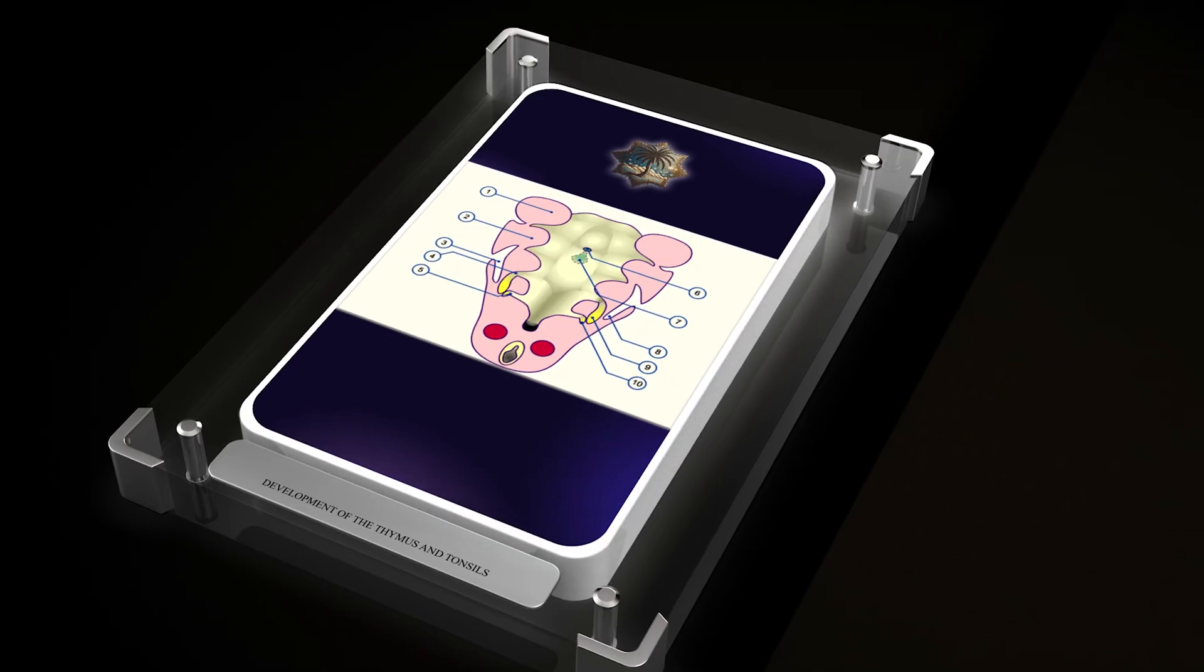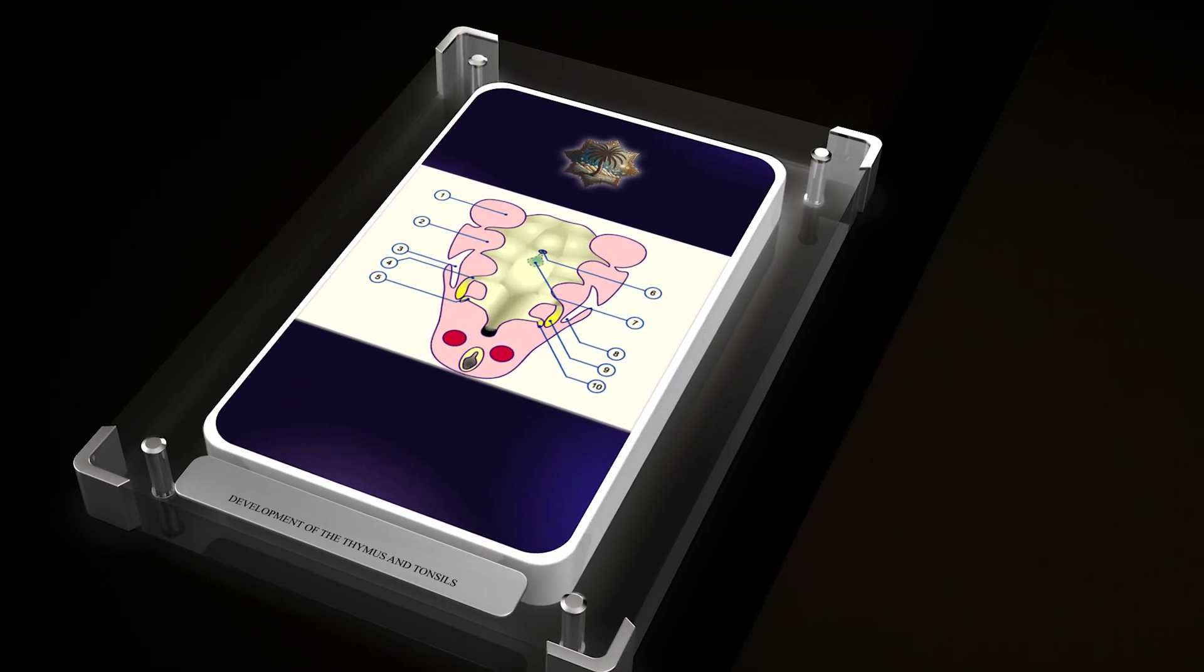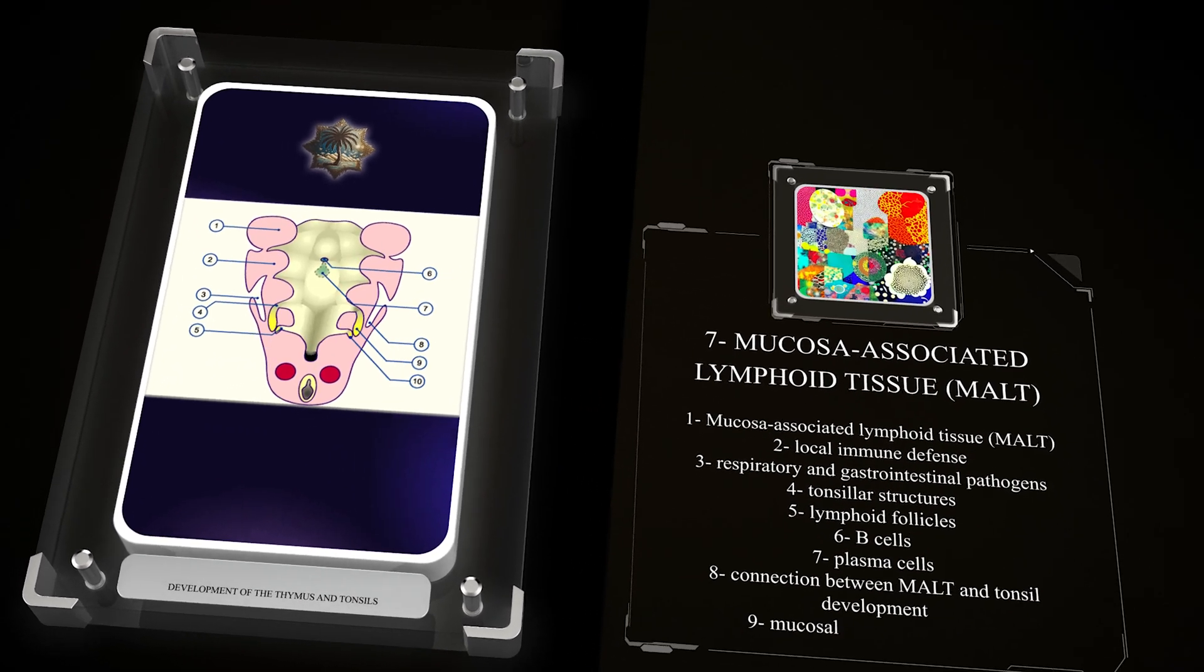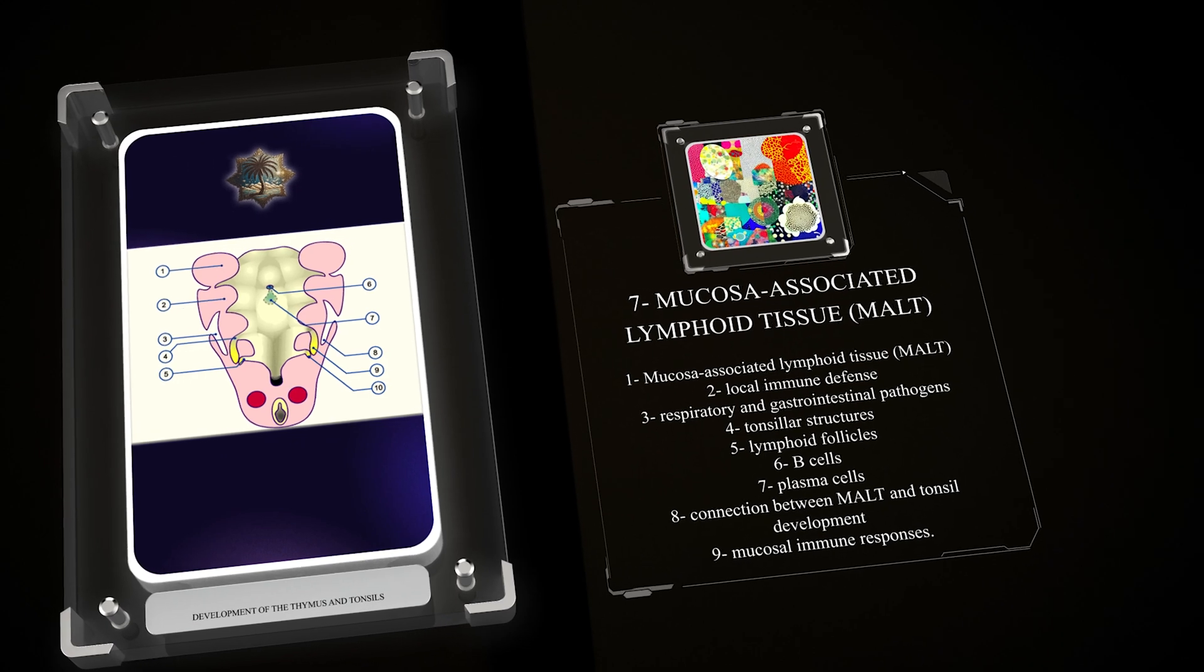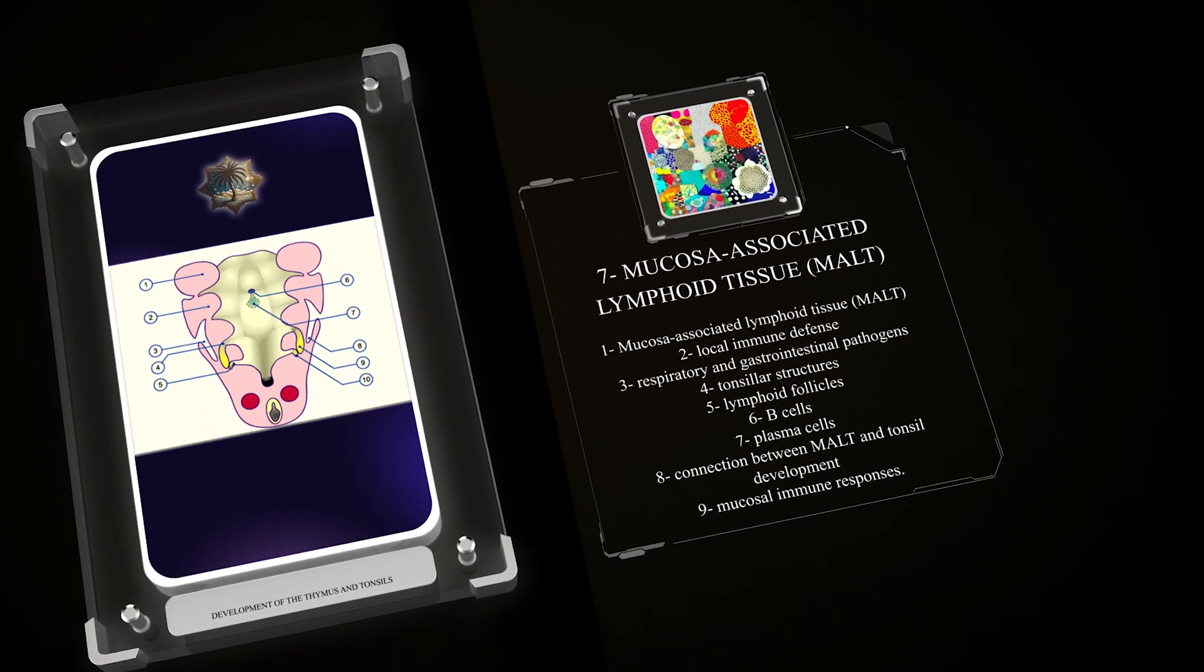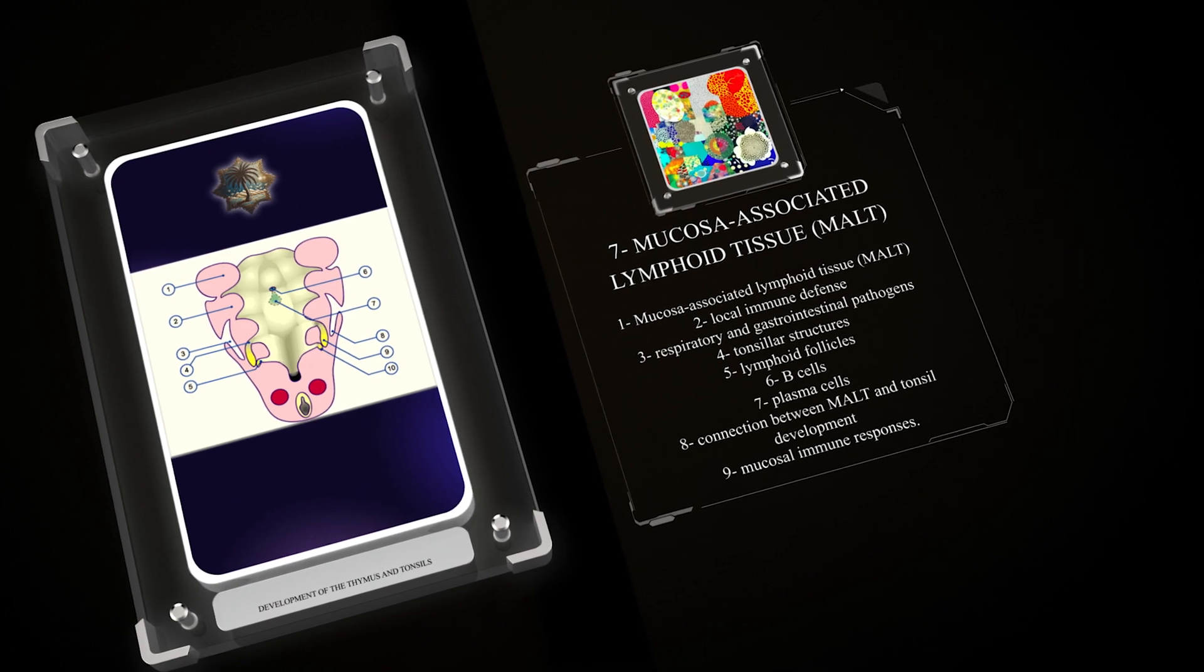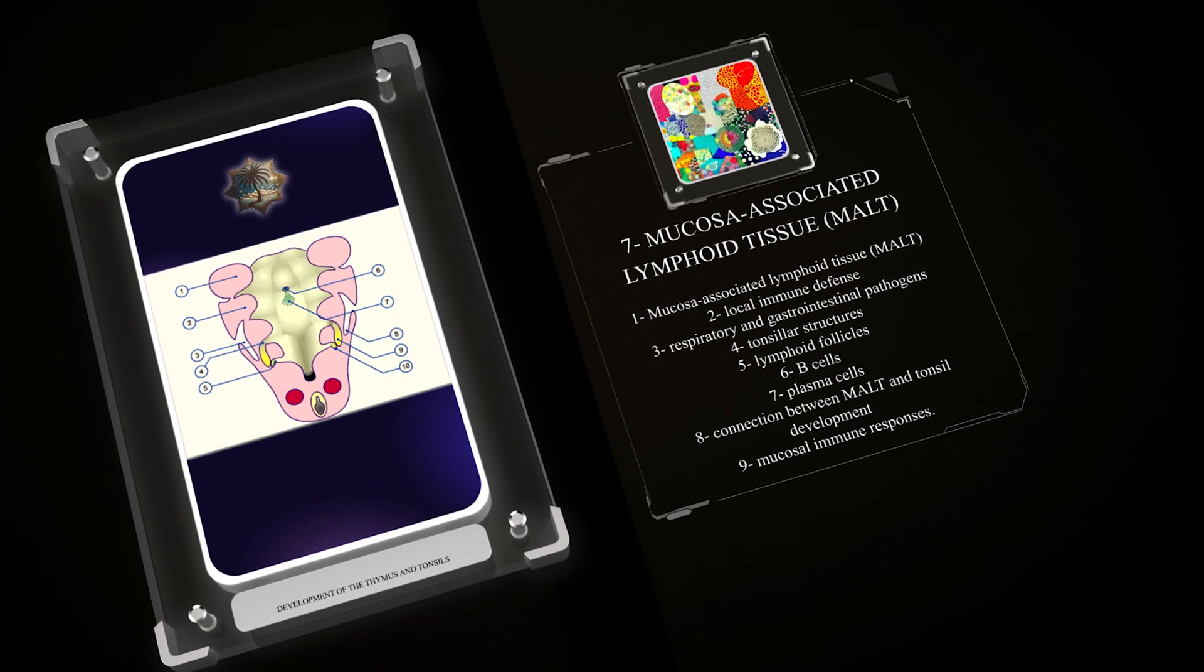Mucoso-associated lymphoid tissue (MALT) is instrumental in local immune defense against respiratory and gastrointestinal pathogens. Tonsillar structures develop in close association with MALT, which encompasses lymphoid follicles, B-cells, and plasma cells. By comprehending the connection between MALT and tonsil development, we gain valuable insight into mucosal immune responses.